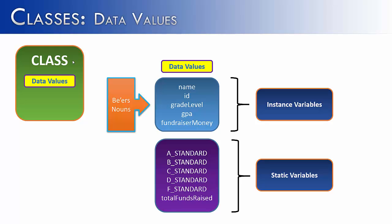And then finally at the bottom we also have one that's not capitalized: total funds raised. Well how is that different from fundraiser money? Well fundraiser money is for the individual student. The individual student says I have raised $50, $100, so on and so forth. But total funds raised would be what has the entire class raised. So if Bobby has raised $50 and Susie has raised $100, total funds raised would equal $150. So that would be a static variable that's true for all members of the class.